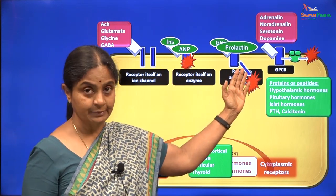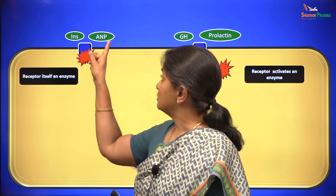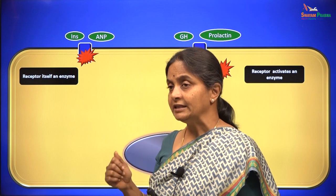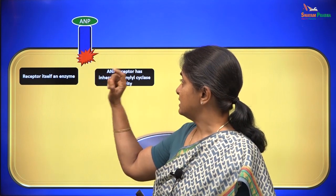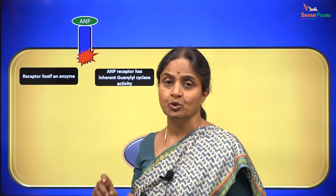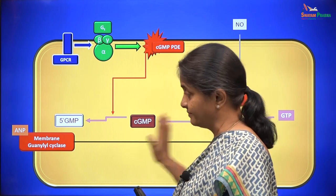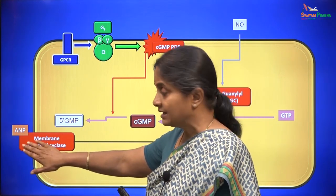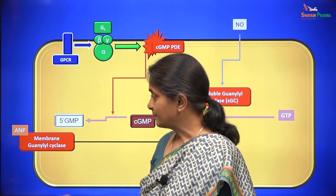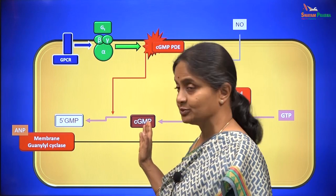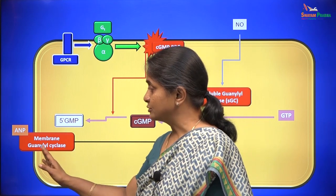We are now going to consider these two types of membrane receptors and their mechanism of signaling. The ANP receptor we have already considered in the session on cGMP signaling pathways. We saw that the ANP receptor is a guanylyl cyclase in itself — a membrane guanylyl cyclase, as against a soluble guanylyl cyclase in the cytoplasm. The ANP receptor is a membrane guanylyl cyclase, also called particulate guanylyl cyclase or PGC, and that increases cGMP levels within the cell, which can bring about vasorelaxation.